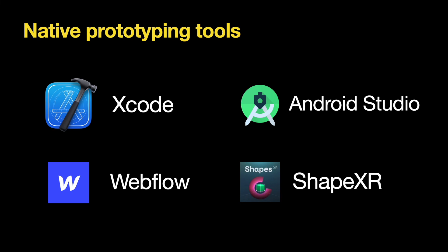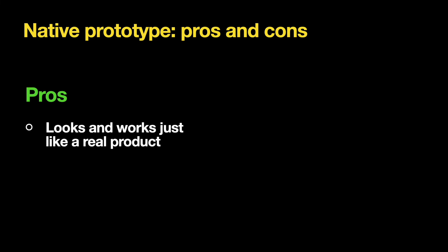Popular native prototyping tools include Xcode for iOS apps, Android Studio for Android apps, Webflow for websites, and ShapeXR for VR apps. The biggest benefit of native prototypes is that they look and work almost like a real product — they use realistic or real data and can be tested on real devices. As a result, native prototypes work very well for usability testing, since test participants don't see any difference between a native prototype and a real app, allowing you to collect the most valuable feedback.